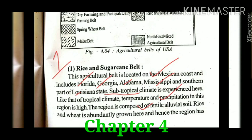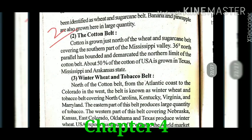The second belt is the cotton belt, which is above the rice and sugarcane belt. The 36 degree north parallel has demarcated the northern limit of the cotton belt. About 50 percent of the cotton of the USA is grown in Texas, Mississippi, and Arkansas. So we now know which states fall under the cotton belt and that 50 percent of total USA cotton production happens in Texas, Mississippi, and Arkansas.